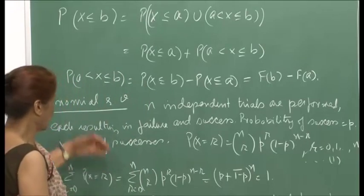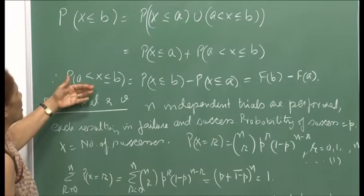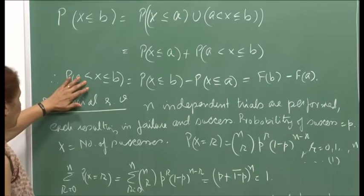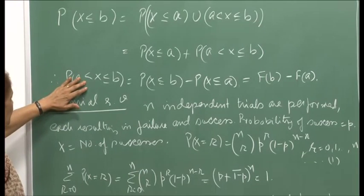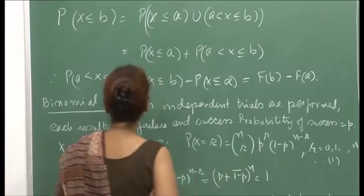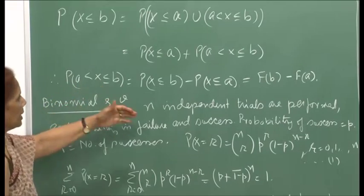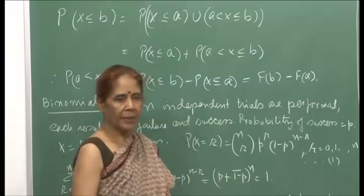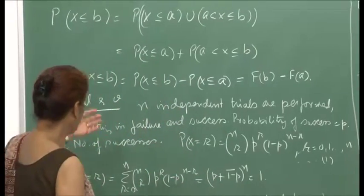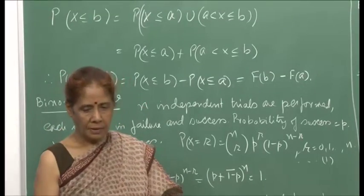In the discrete case, it matters whether equality is there or not. If you also want the probability that x equals a, you simply add p(a), because x equal to a is disjoint from the interval set. So you can get various forms of the probabilities for x being in an interval, written through the distribution function.